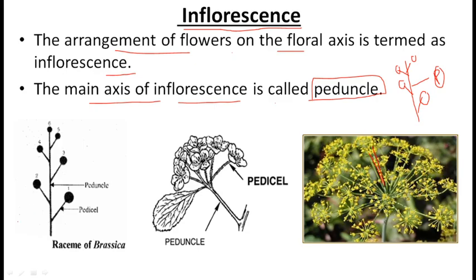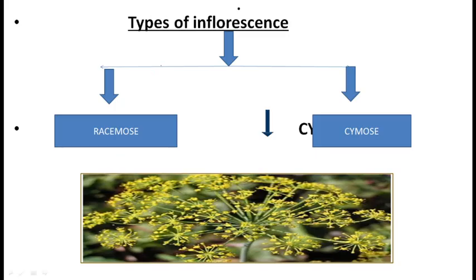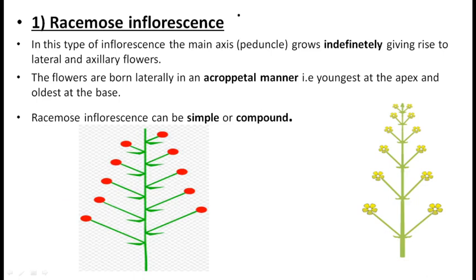Inflorescence is divided into two main types: the first is the racemose type of inflorescence and the second is the cymose type of inflorescence, as per your textbook. There are some special types of inflorescence also, but these are not mentioned in your syllabus, so we will discuss only these two types.